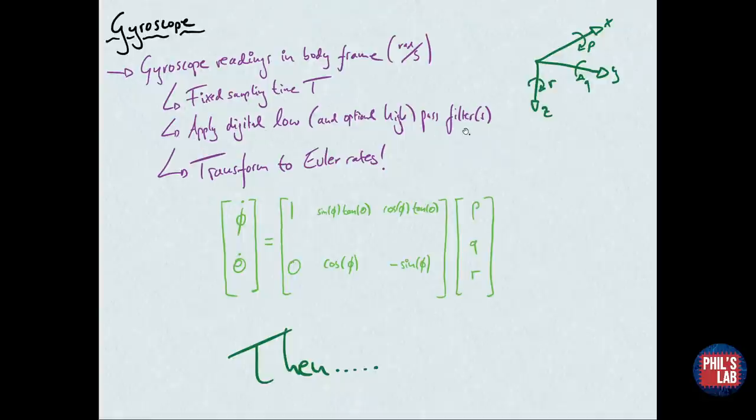Then we need to transform to the Euler rates. We go from the body rates P, Q, R, multiply by this matrix, and then go to phi dot and theta dot to get our Euler rates.